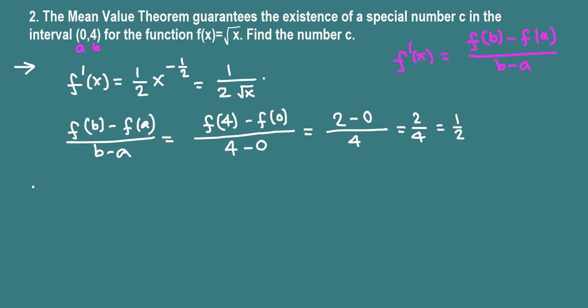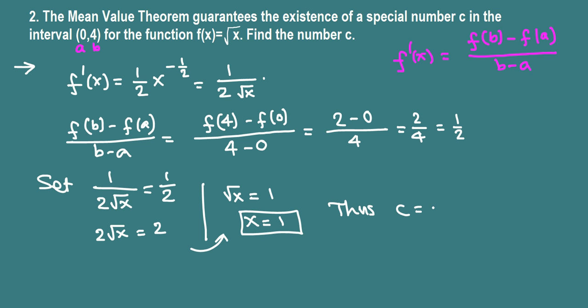Now we set the slope of the tangent line equal to the slope of the secant line, which is 1/2, and solve for x. Cross multiply: 2√x = 2. Divide by 2: √x = 1. Square both sides: x = 1. That's the c value, which happens to be inside (0,4). Thus c = 1.